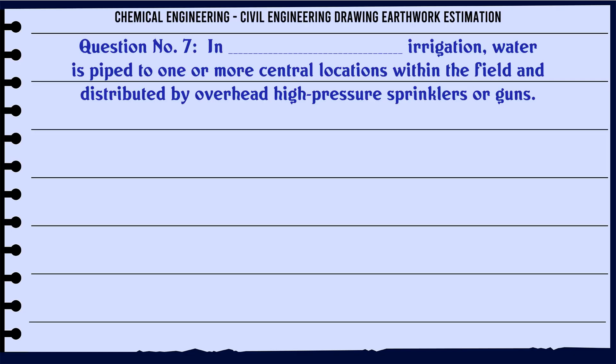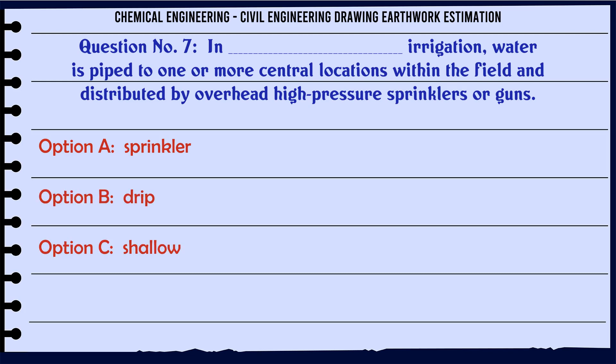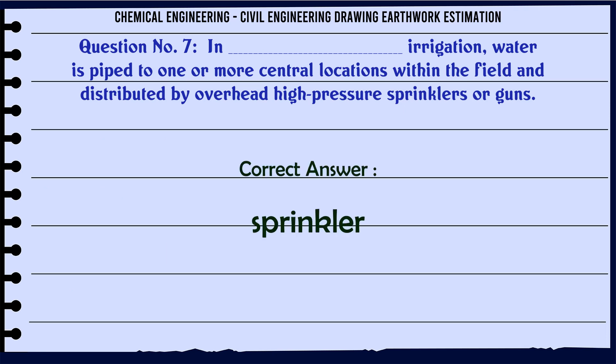In this irrigation, water is piped to one or more central locations within the field and distributed by overhead high-pressure sprinklers or guns. A. Sprinkler. B. Grip. C. Shallow. D. Rotary. The correct answer is: Sprinkler.